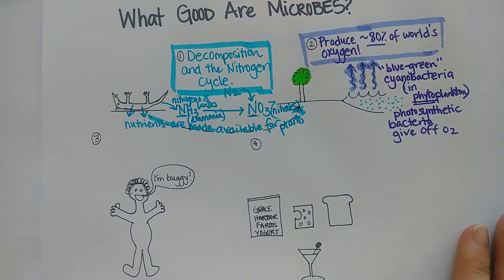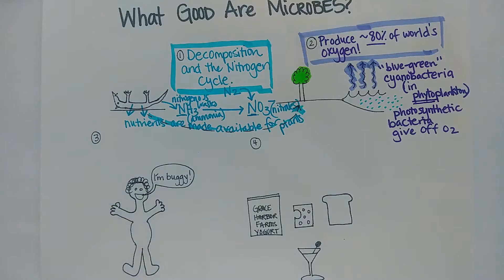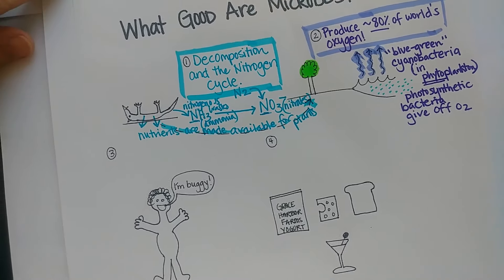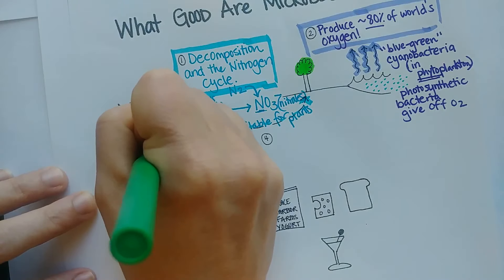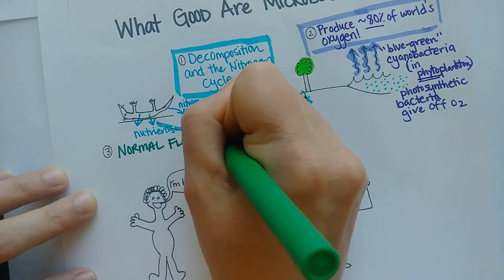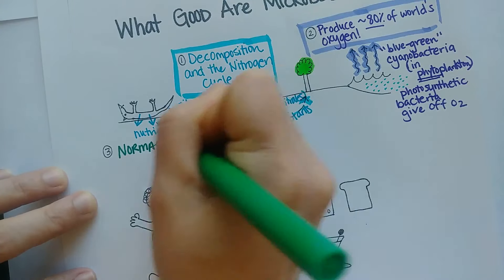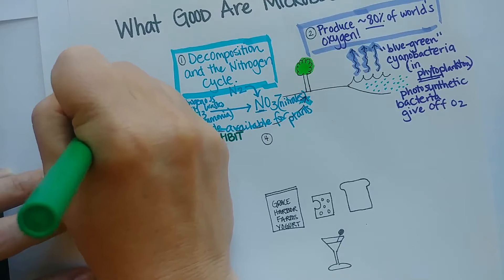Rule number three—probably my favorite to talk about on this page—is normal flora inhibits disease. Sometimes the normal flora nowadays you'll hear it called the microbiome.